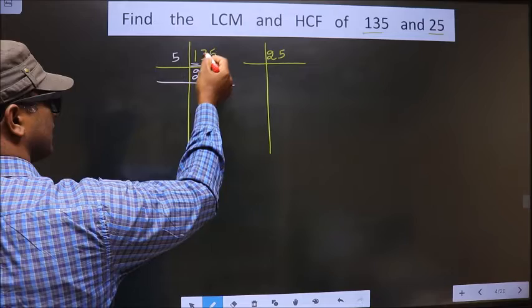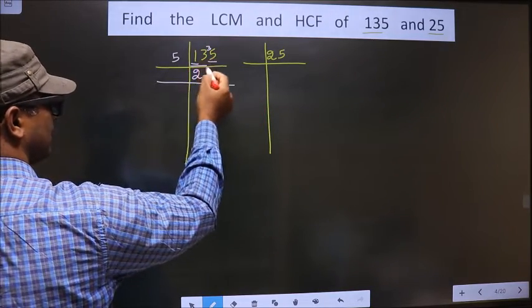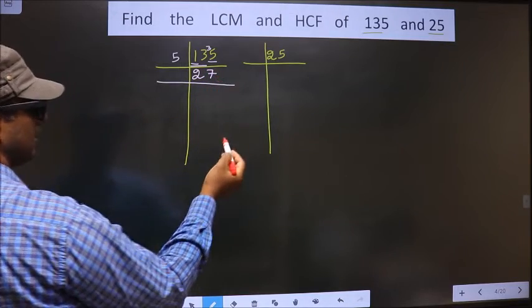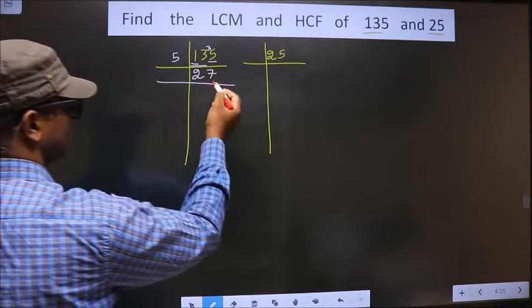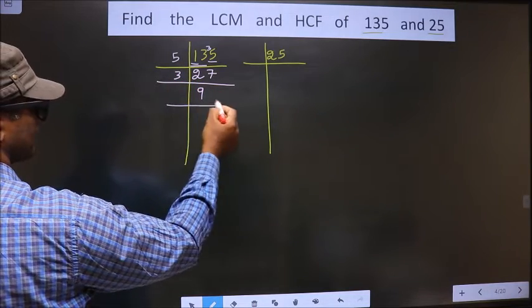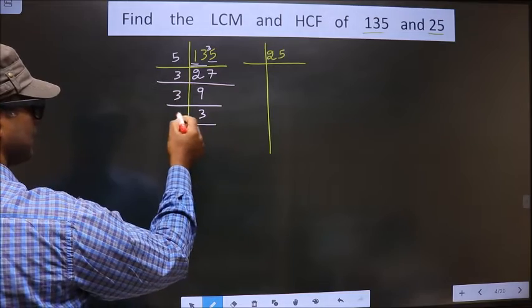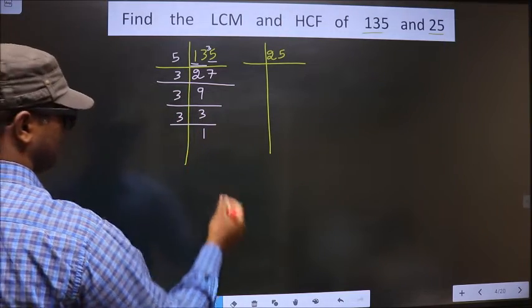13 minus 10 is 3, 3 carried forward making it 35. When do we get 35 in 5 table? 5 times 7 is 35. Here we have 27. 27 is nothing but 3 times 9. 9 is 3 times 3. 3 is a prime number, so 3 and 1.